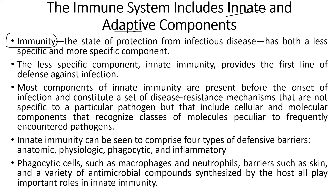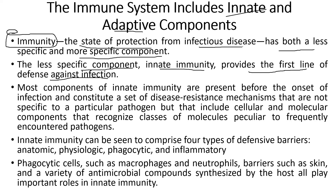Starting with immunity: by the term immunity, what do we mean? It's the state of protection from infectious disease, which has both a less specific and a more specific component. The less specific component is the innate immunity, which provides the first line of defense against infection, whereas the more specific component is the adaptive immunity. Innate immunity is something that is inborn — present with us from birth — and it helps protect us against common illnesses.